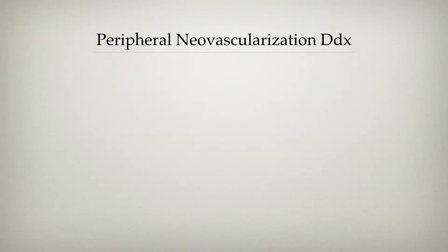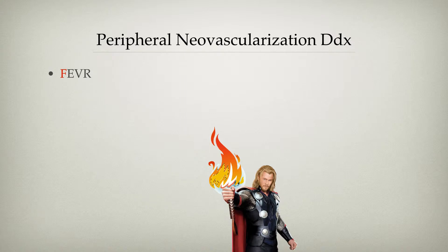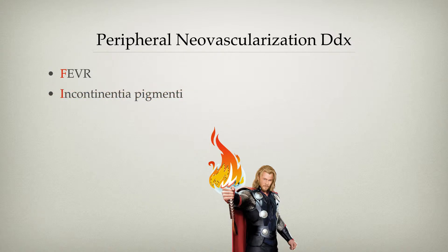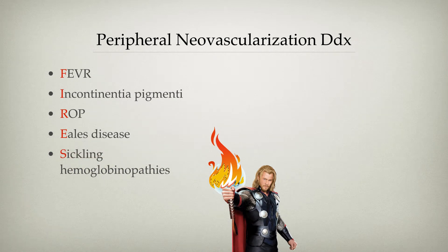This is a mnemonic I came up with a few years ago, and it's called the Fires of Thor, and there's a little picture with it. The F stands for familial exudative vitreoretinopathy. The I stands for incontinentia pigmenti. The R stands for retinopathy of prematurity. The E stands for Eales disease.